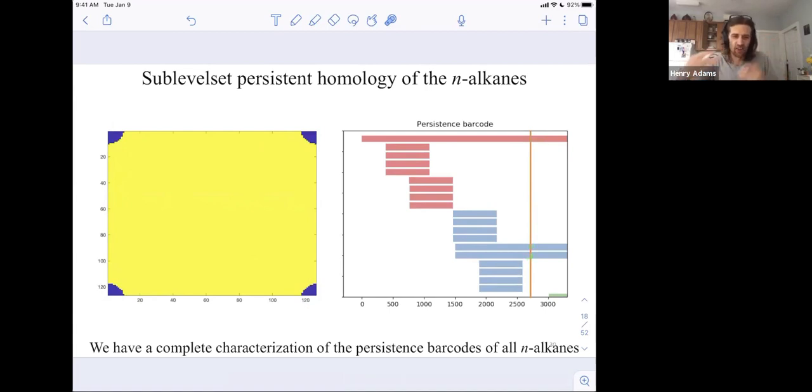And then that didn't show the final sublevel set, which is when the entire torus is included. And that would be for this vertical line here, where at the very end you have a single connected component, two one dimensional holes and the entire torus has a single two-dimensional hole as well.